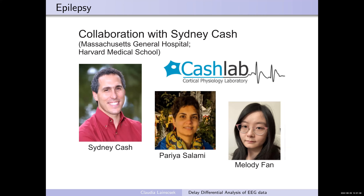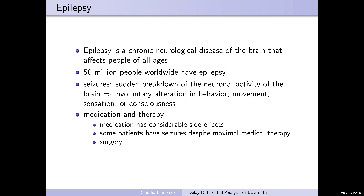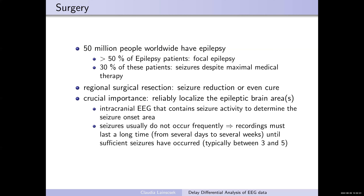For the epilepsy data, I'm collaborating with Sid Cash in Boston, working mainly with Barria and Melody. Epilepsy is a chronic neurological disease affecting people of all ages — about 50 million people on this planet have epilepsy. It manifests in seizures, which are a sudden breakdown in neural activity causing alterations in behavior, movement, sensation, and consciousness. People with epilepsy often dislike their medication because of severe side effects, and many still get seizures despite medication. The last resort is surgery, and that's where I come in.